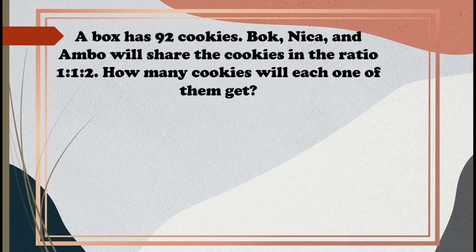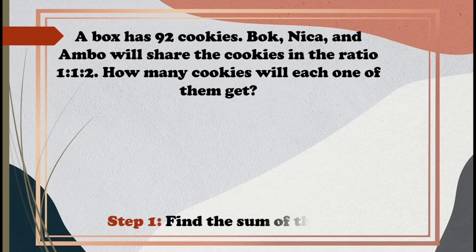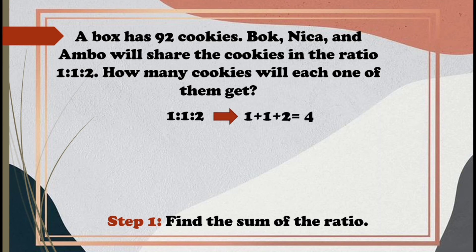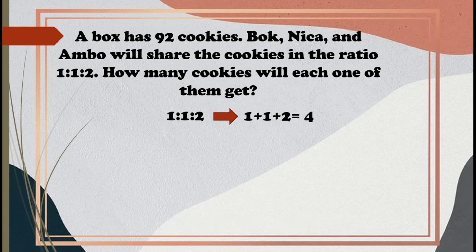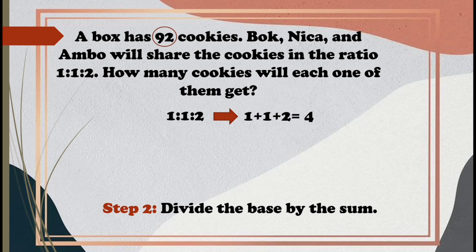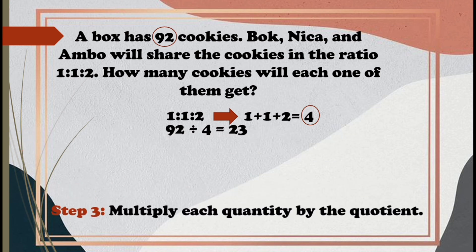In solving the partitive proportion, the first step is to find the sum of the ratio. Since the ratio is 1 is to 1 is to 2, let's add the numbers. 1 plus 1 plus 2 is 4. Now, the next step is to divide the base by the sum. The base is the total number of cookies, which is 92. Let's divide 92 by the sum of 4. 92 divide 4 is 23. And for our final step, let's multiply each quantity by the quotient.